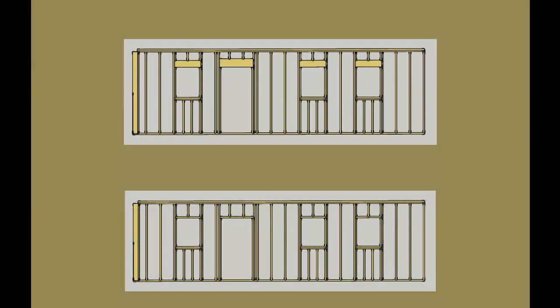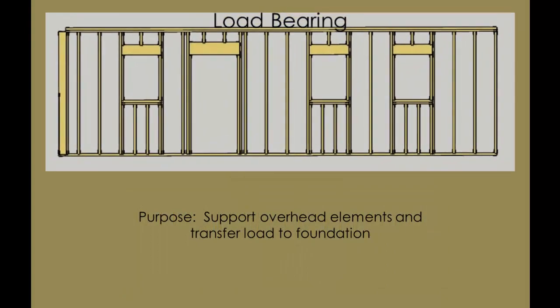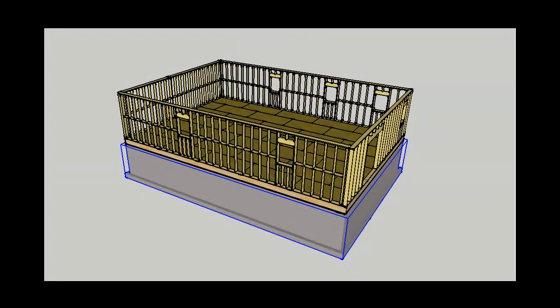In light frame construction, there are two types of walls. While their composition is very similar, fundamentally they are quite different. Load-bearing walls are designed to provide structural support — in other words, they carry the load from overhead elements such as another floor level or a roof structure.